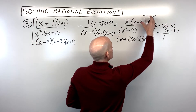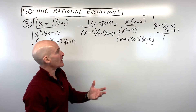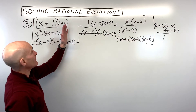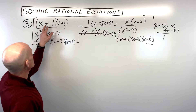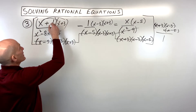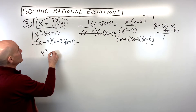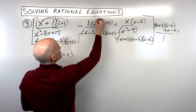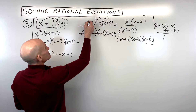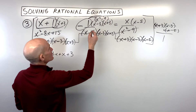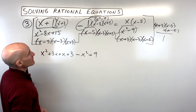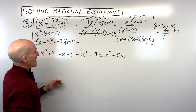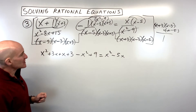We're going to clear those denominators by multiplying through by the common denominator — x plus 3, x minus 3, and x minus 5 — distributing to everything on both sides to keep the equation balanced. That clears the denominators and gives us a much easier equation to solve. We just have the numerators left. Let's simplify: using the distributive property or FOIL, we get x squared plus 3x plus x plus 3. Over here, x minus 3 times x plus 3 gives x squared minus 9, but with a negative 1 distributing in, that becomes negative x squared plus 9. And that equals x squared minus 5x.